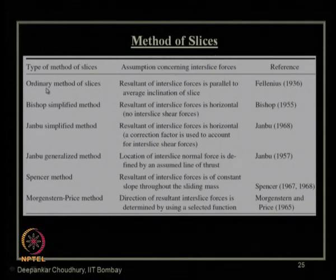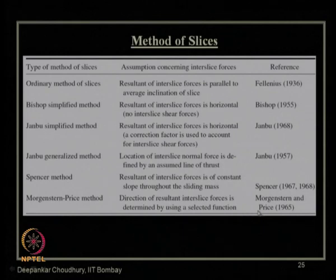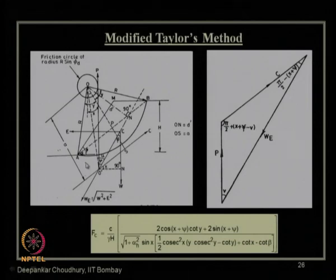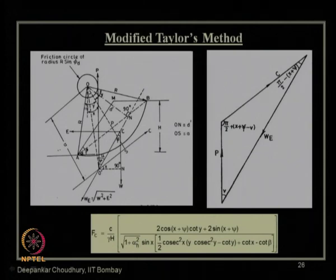Various methods of slices are used in static slope stability analysis, and their references are provided. For modified Taylor's approach, the normal to the failure surface resultant must pass through a circle concentric about point O — that is the Taylor circle. To modify it for seismic conditions, the weight W changes to WE, which accounts for the horizontal seismic inertia force E.